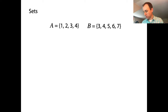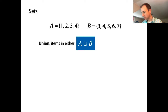Here are a couple of sets, A and B — sets of integers. I'm using the usual curly brace notation to enumerate all the items in the set. The first thing we want to remind ourselves is: what's the union? The union is just the set of all items that are in either of the two sets. So A union B is the set of all items in either A or B, or both.